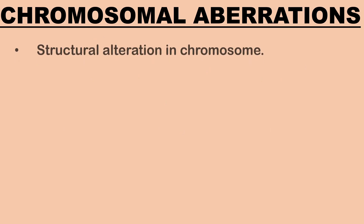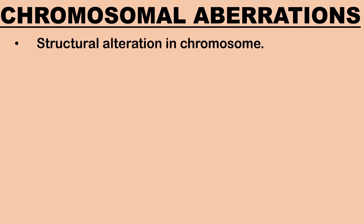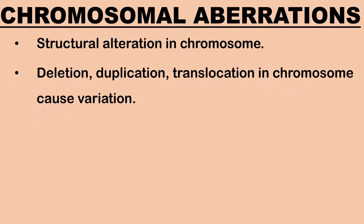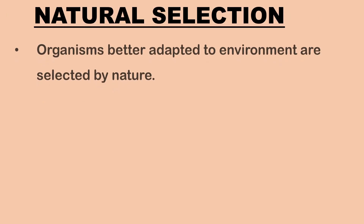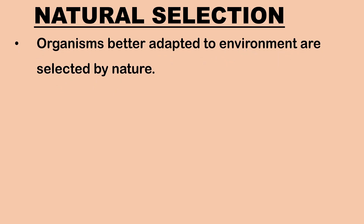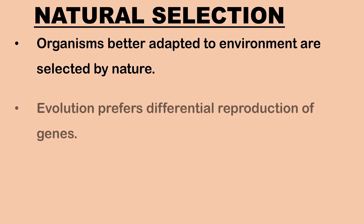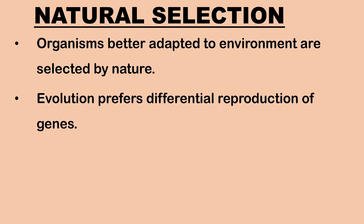Chromosomal aberrations refer to structural alterations in a chromosome by deletion, duplication, translocation, etc., which bring about changes causing variations. Regarding natural selection: organisms that are better adapted to the environment are selected by nature. Evolutionary changes occur as natural selection favors differential reproduction of genes. Advantageous mutations are included into the population through the process of natural selection.